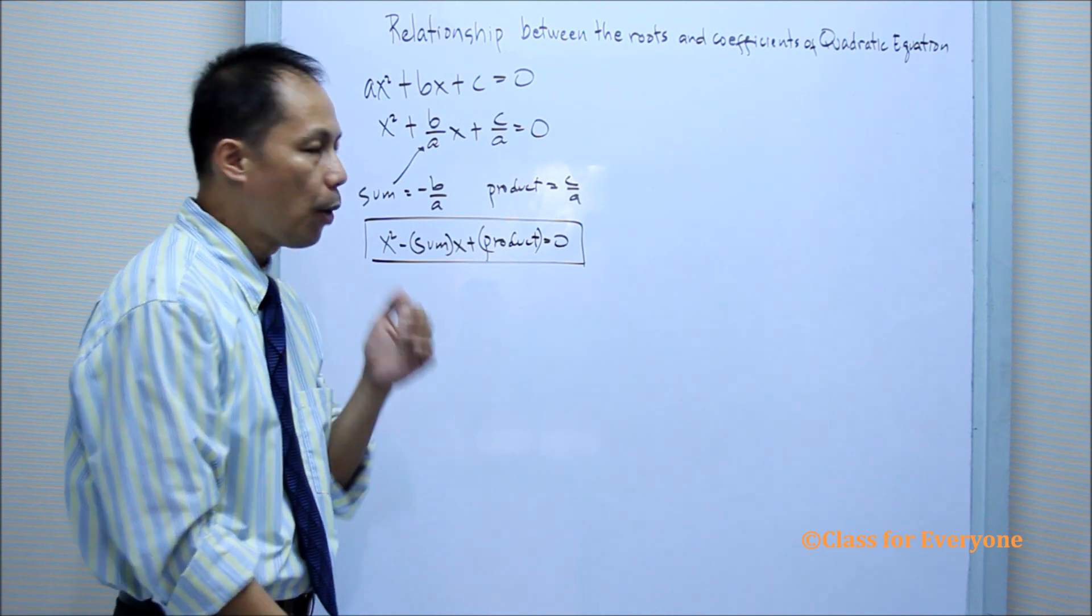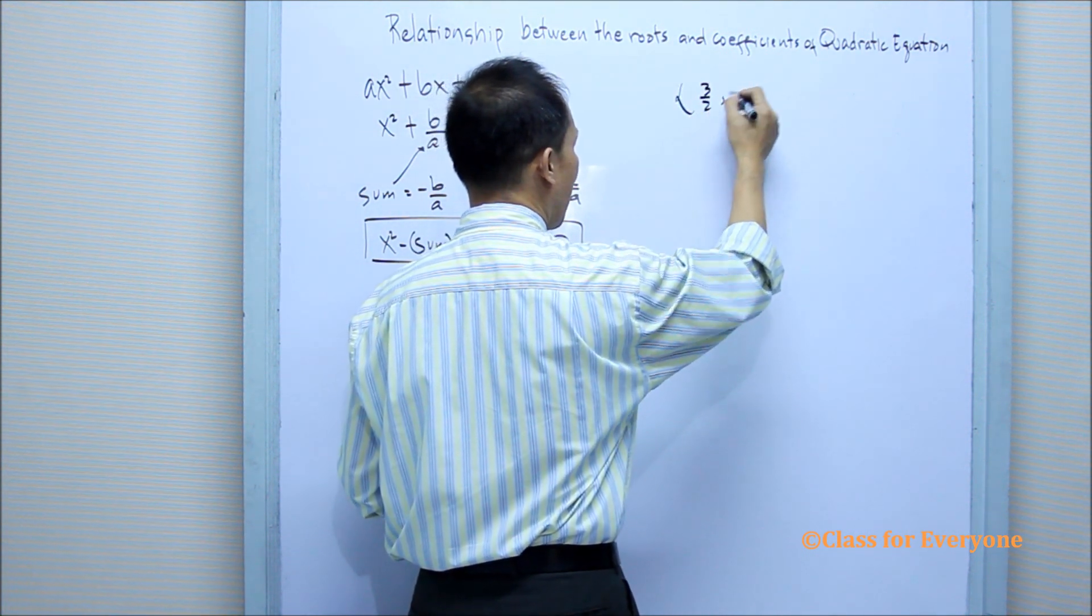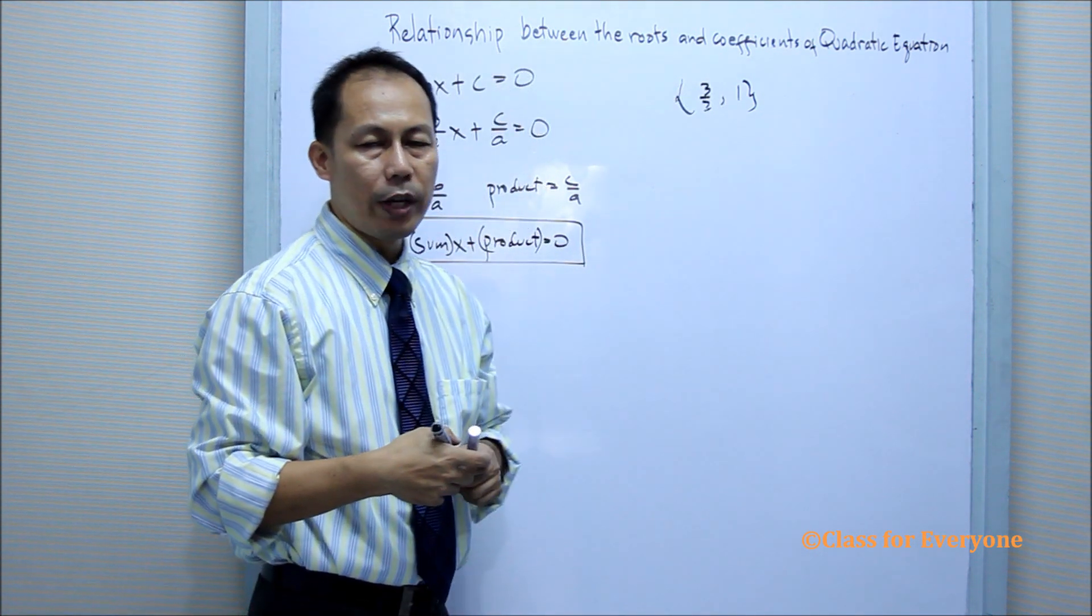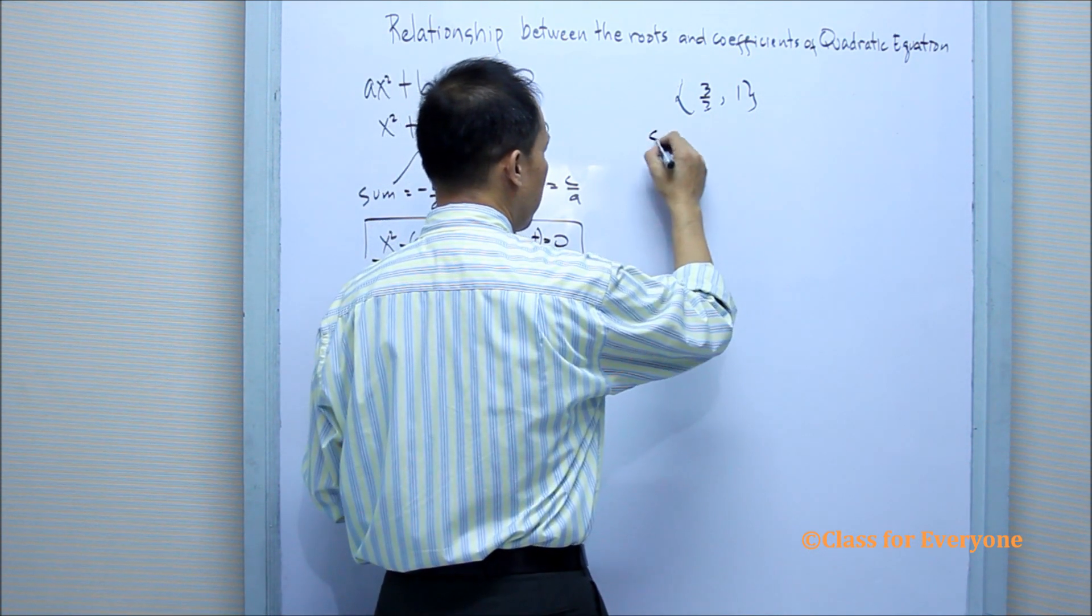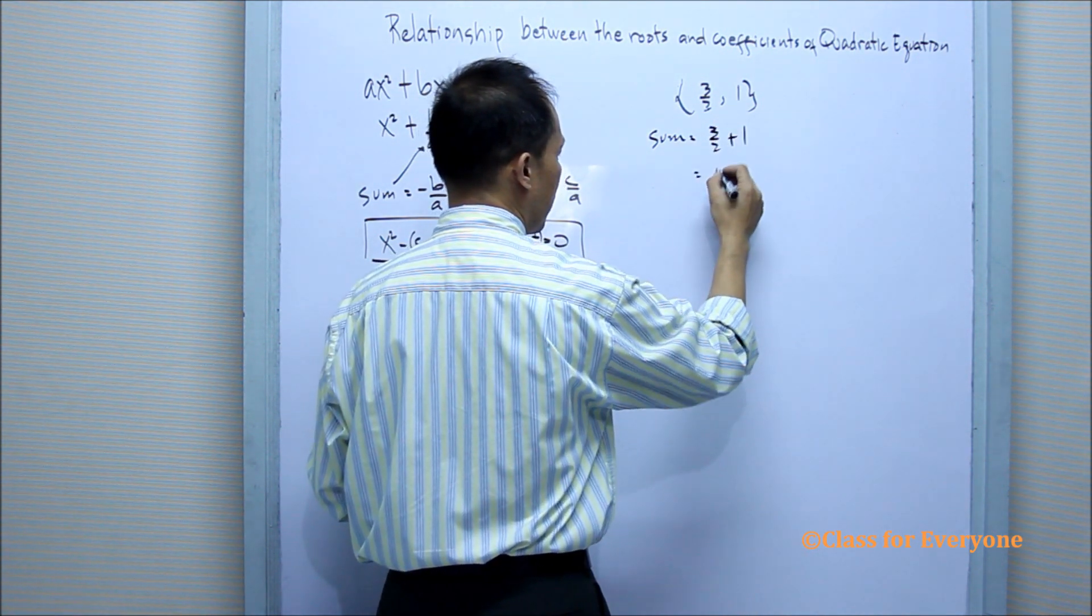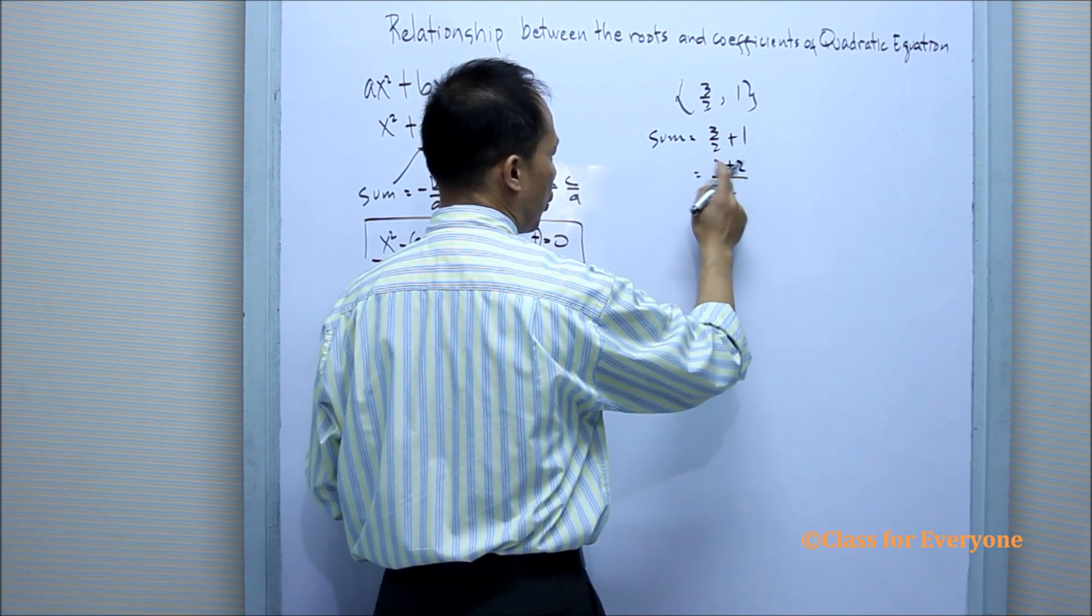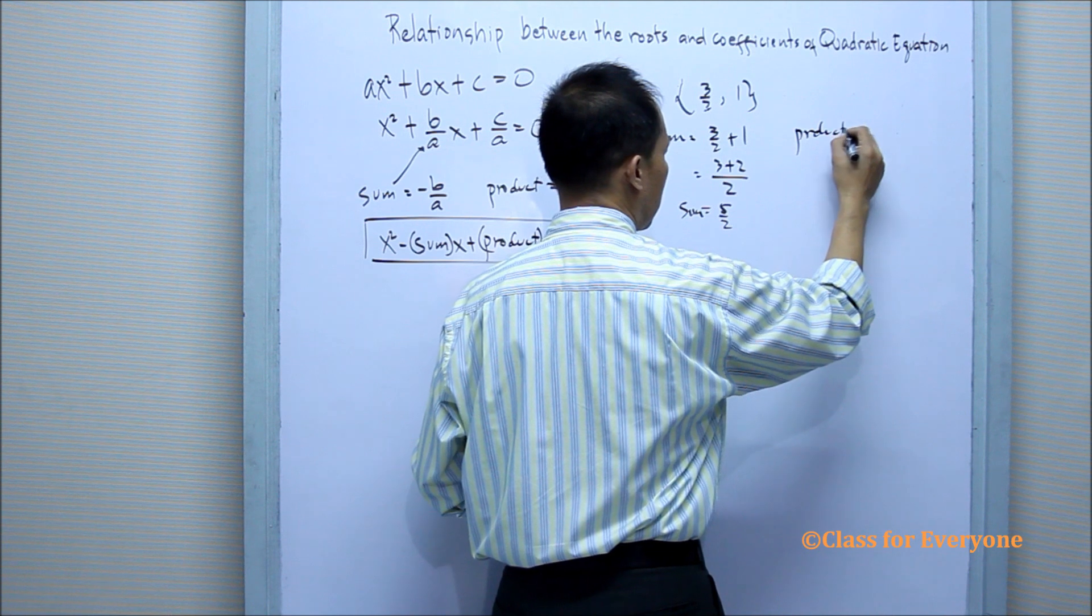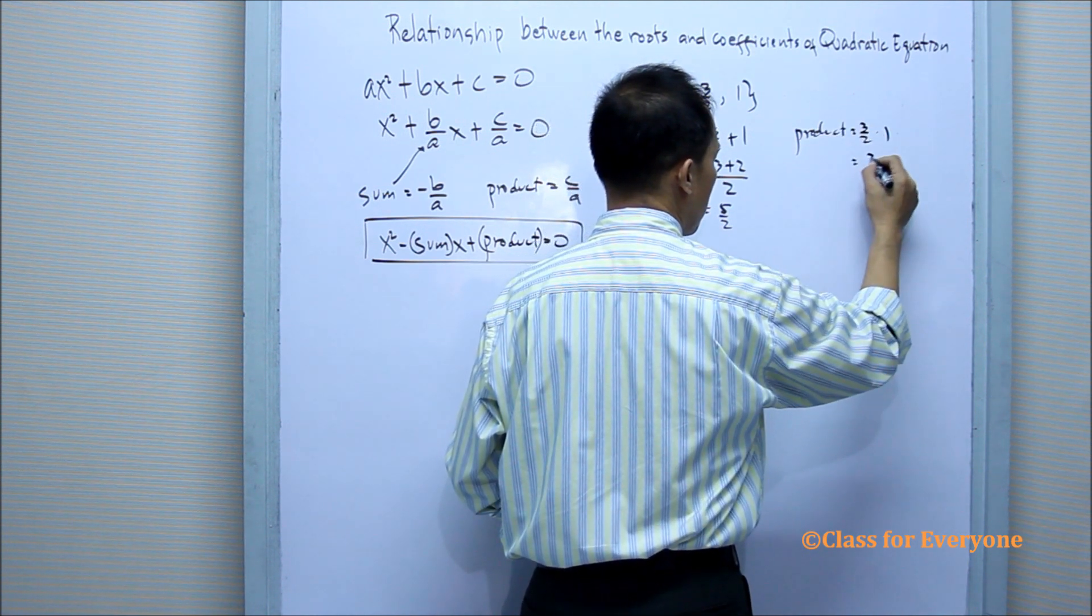Suppose we have an example where the roots are 3/2 and 1. We are going to find a quadratic equation with integral coefficients. The sum is equal to 3/2 plus 1. Getting the same denominator, 2/2, so 3 plus 2 is 5/2. That is the sum. For the product, it is 3/2 times 1, which is equal to 3/2.